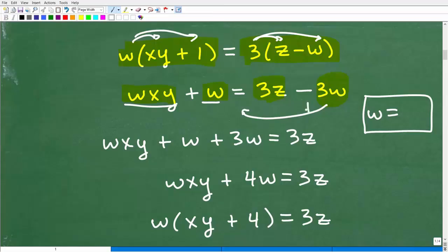So how can I do that? Well, simply add 3w to both sides of the equation. And you're left with this. Okay, wxy plus w plus 3w is equal to 3z.